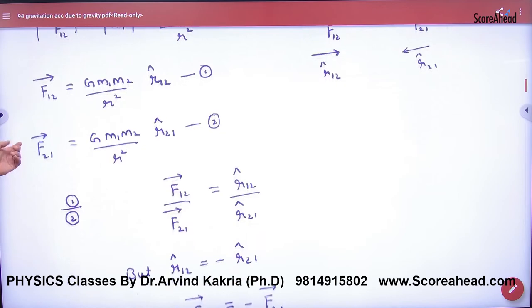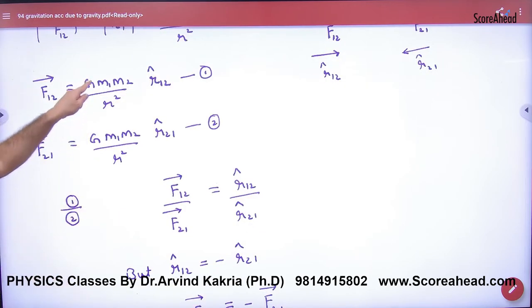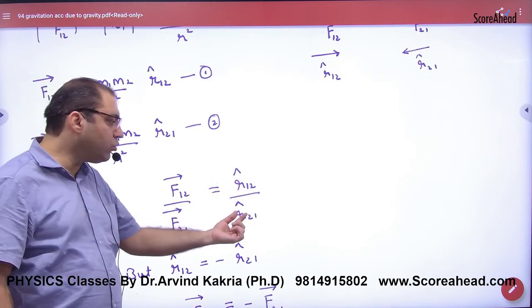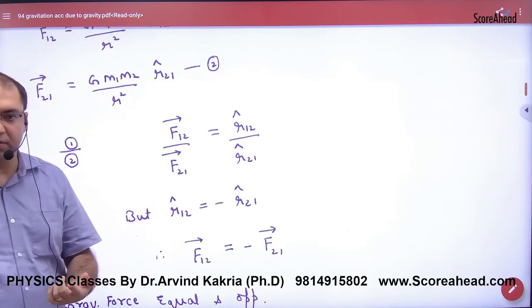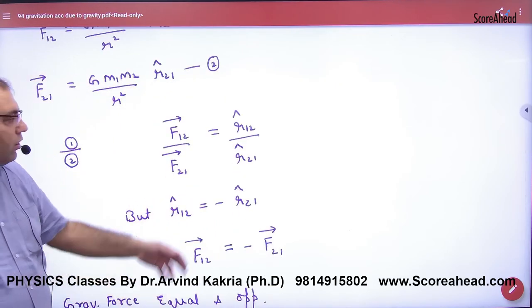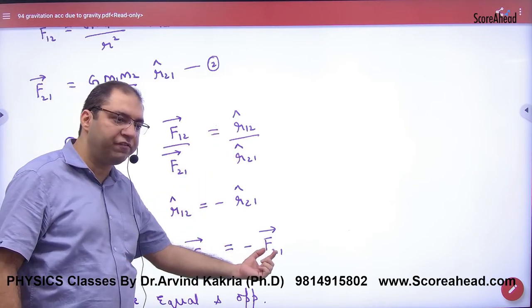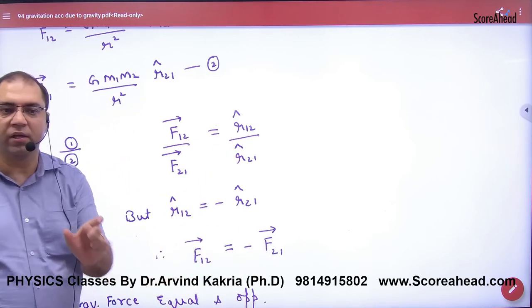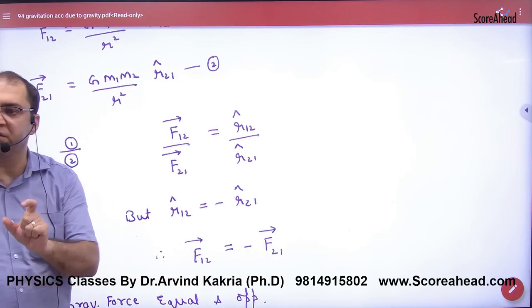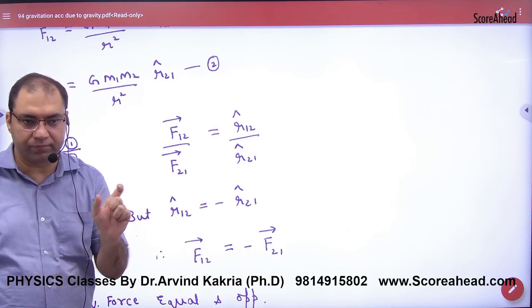If we compare these two, r12 and r21 are the same magnitude but opposite direction, differing by a negative sign. So F12 vector equals minus F21 vector. This shows that Newton's gravitational law produces equal and opposite forces.